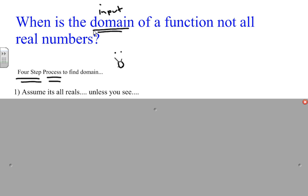So how do we do this? First off, we always assume that it's all reals. That is called the natural domain, or the assumed domain of a function. You assume first off that it's always going to be all reals.